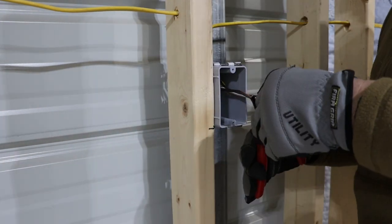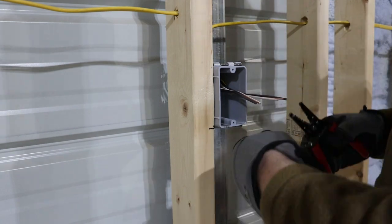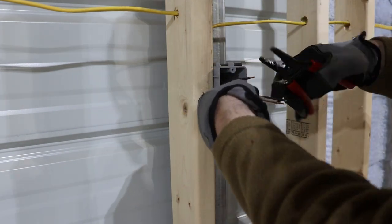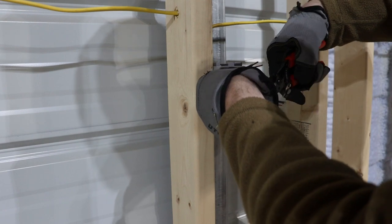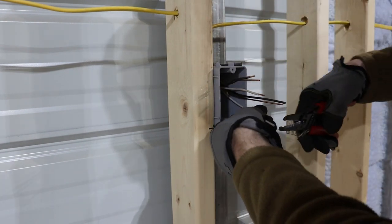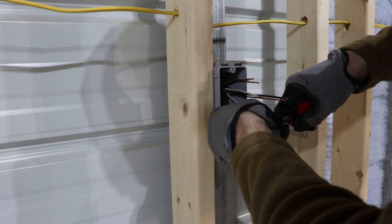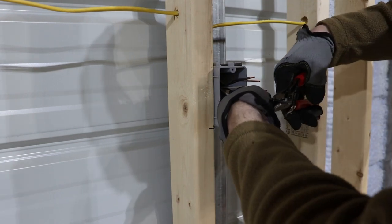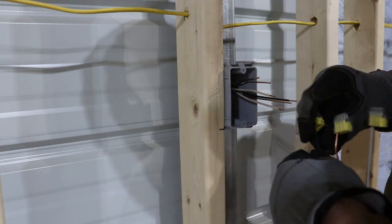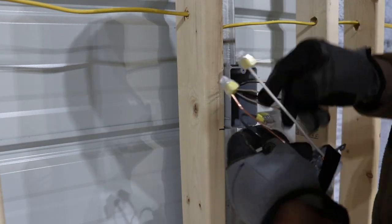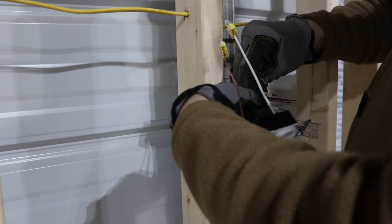You do want to make sure that these wires are pretty close to being the same length. Go ahead and strip these off. These ones are only three-eighths, about three-eighths of an inch, because you're not trying to wrap them around the screw or anything. You certainly don't want any copper sticking out of the back of the connectors or a wire nut if you decide to wire nut these.